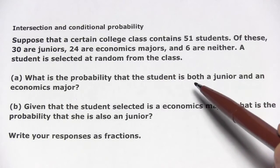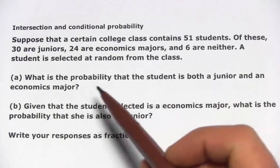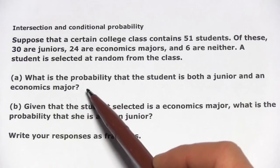A student is selected at random from the class, and we want to know what's the probability that the student is both a junior and an economics major, so that's the intersection.